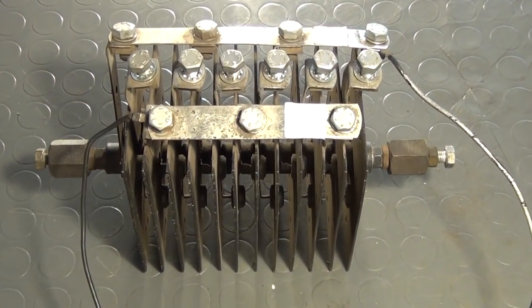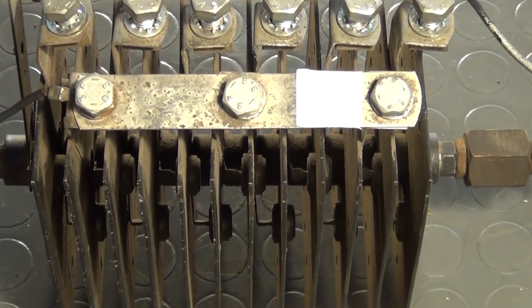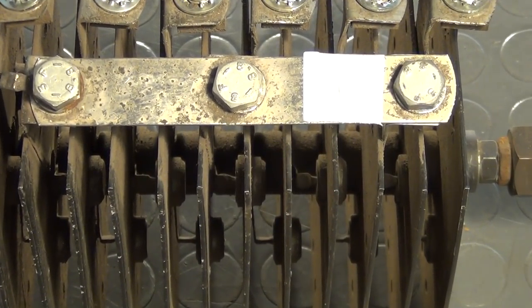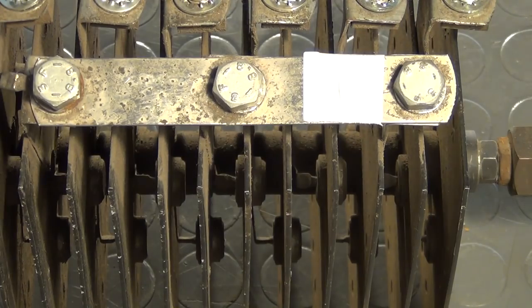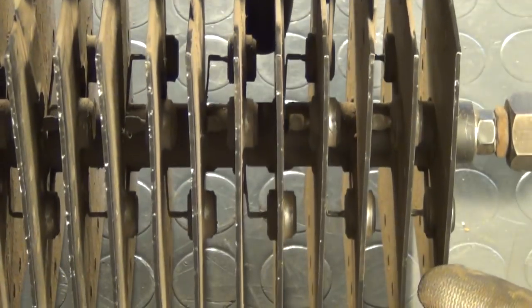And here we have our rectifier bridge. And if you take a closer look, you can see that there are little discrete components mounted onto the heatsink. And these are 24 high-current rectifier diodes. Why so many? Well, I'll explain to you in just a minute.